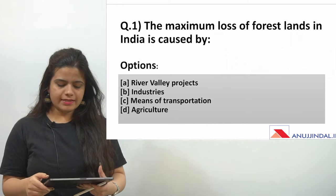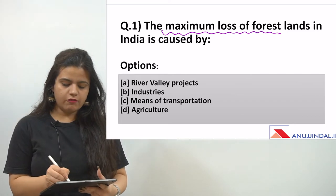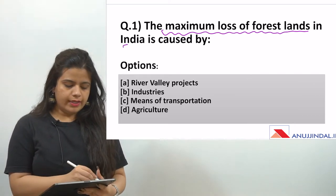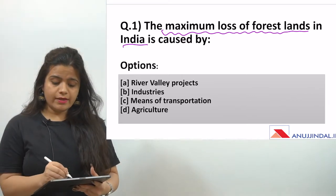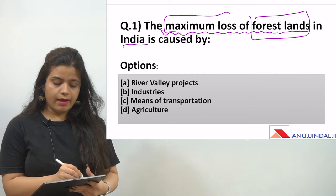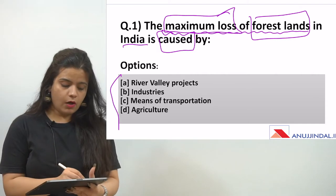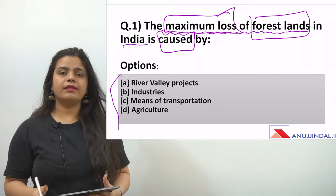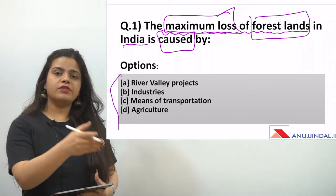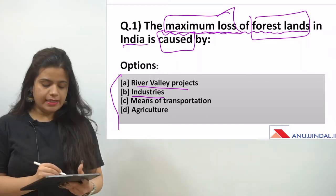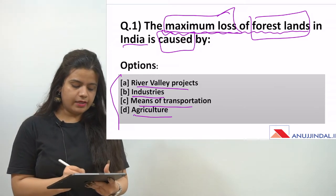The first question is: the maximum loss of forest lands in India is caused by what? The options are: (A) river valley projects, (B) industries, (C) means of transportation, and (D) agriculture.